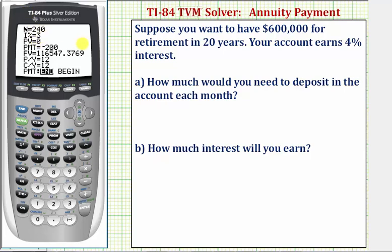The interest rate is given as 4%, so we enter 4 and press Enter. The present value, or starting amount, would be $0, so we press Enter. We're trying to solve for the monthly payment needed, so we'll come back to that row.